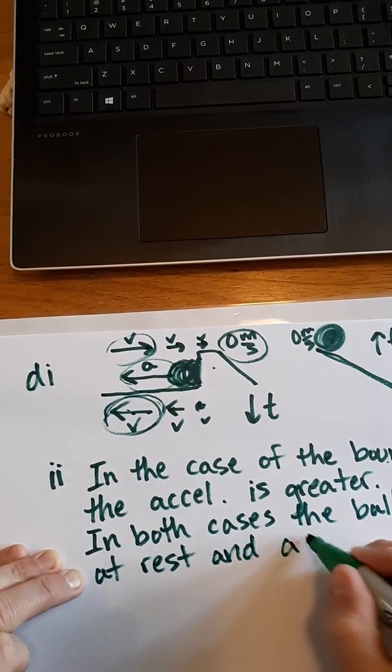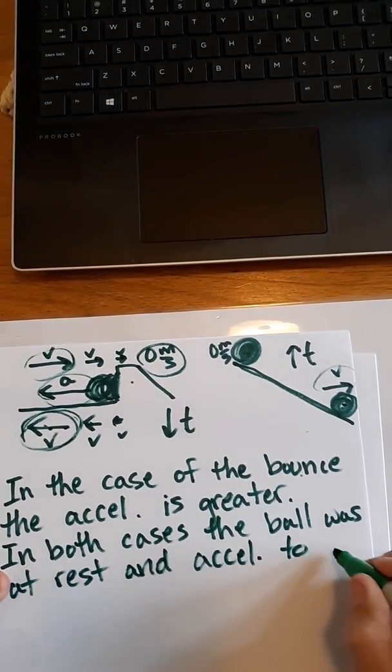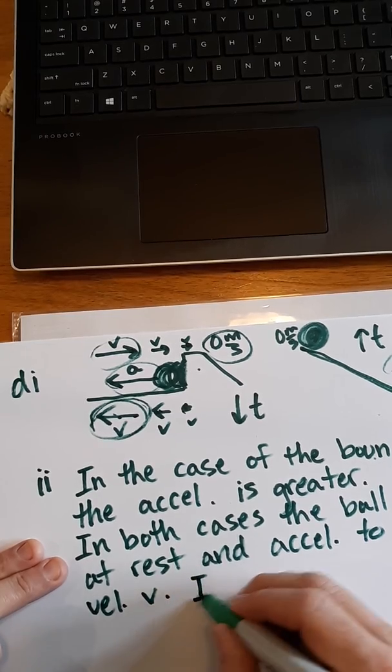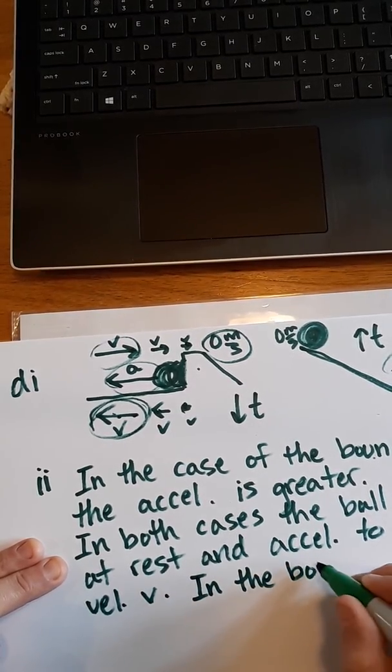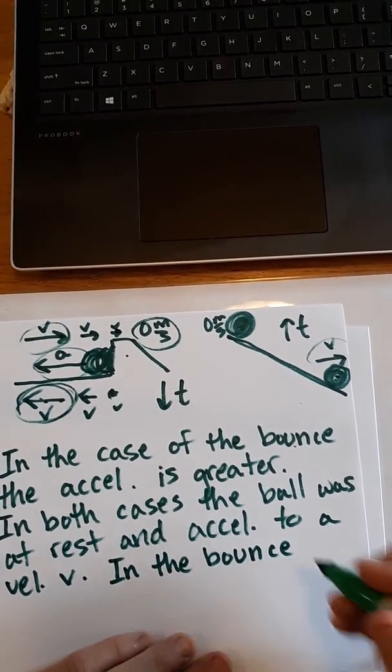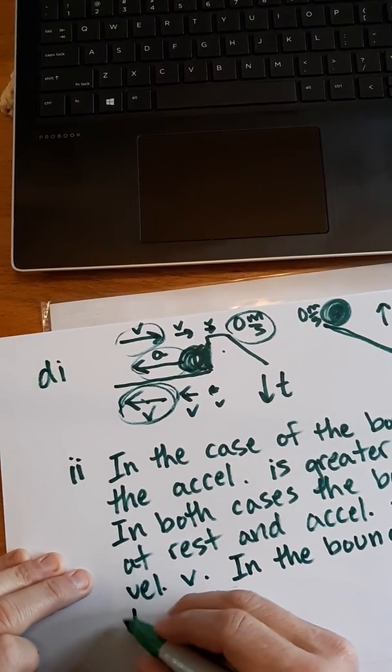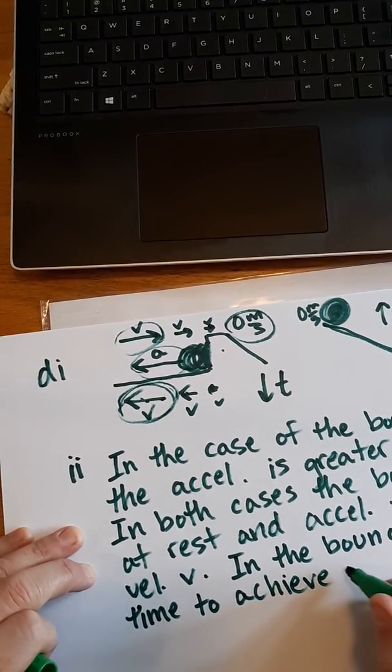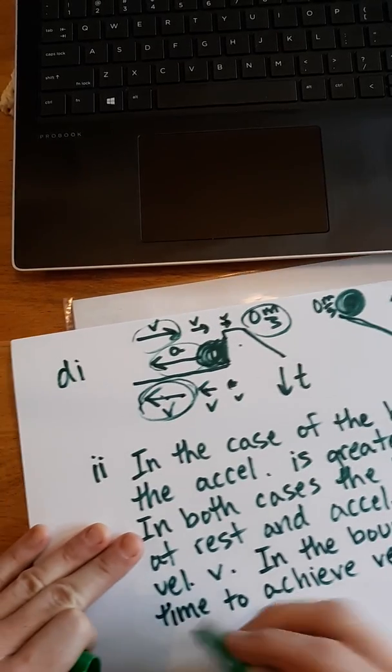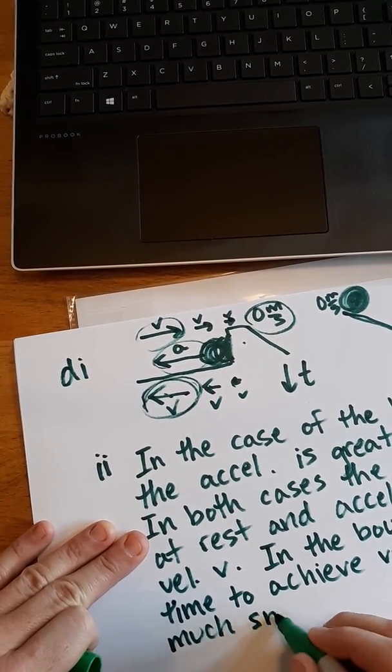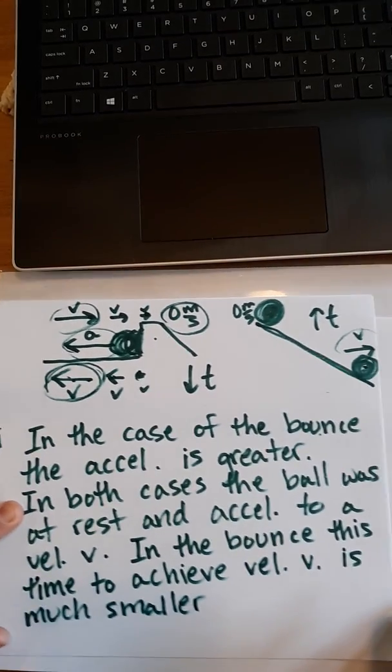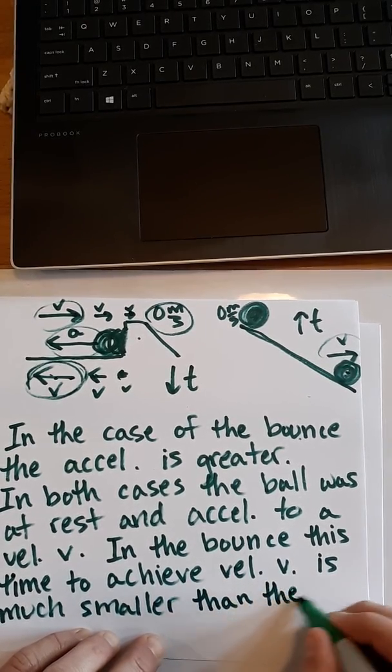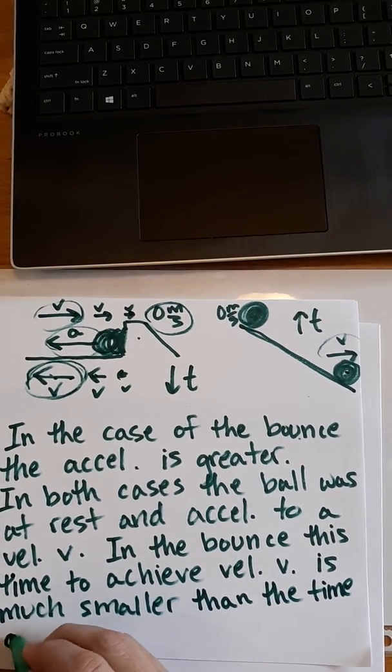...and accelerated to a velocity V. In the bounce—or during the bounce, you don't say in the bounce, but I already wrote it—in the bounce, this time to achieve velocity V is much smaller than the time associated with rolling down the hill.